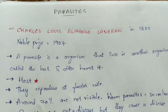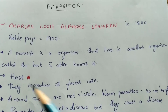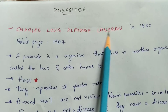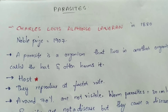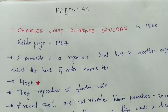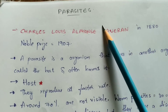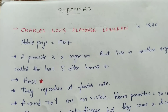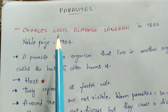In this video, let us discuss the introduction of parasites, types of parasites, and the diseases they cause. Charles Alphonse Laveran is the scientist who discovered the theory of the parasite. He gave the definition, structure, and types of parasites, and he won the Nobel Prize in 1907 for his work in medicine.